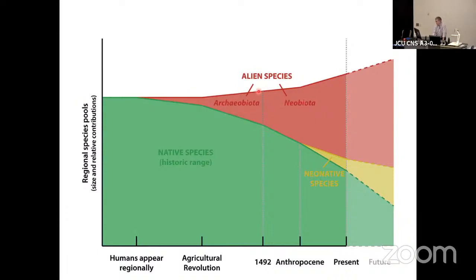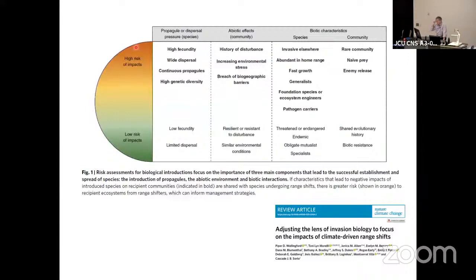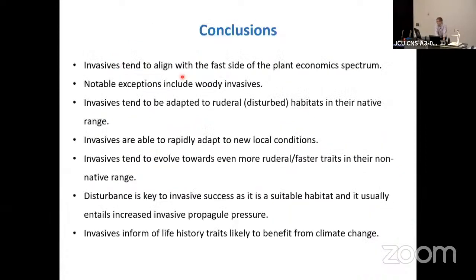There is an example here with deer in North America — native animals migrating north because of climate change, eventually displacing some species that may not be able to migrate farther north. Some traits developed as a risk assessment on the same article: high-risk traits that can be identified in species that could become harmful tend to be associated with the fast side of the plant economics spectrum — or in this case it could be the animal economic spectrum. As far as I know no one is using that term in animal ecology, but I think it could be an interesting concept to explore.